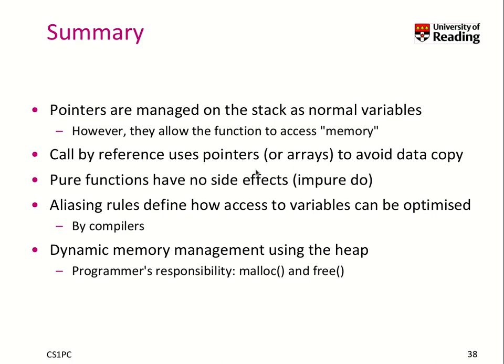Call-by-reference uses pointers or arrays to avoid the data copy, because you just need to copy the pointer, which is the memory address. Pure functions have no side effects, in contrast to impure functions. Aliasing rules define how to access variables and how they can be optimized automatically by compilers.